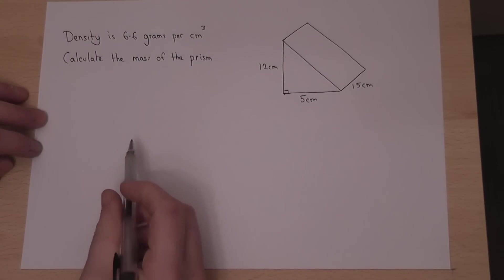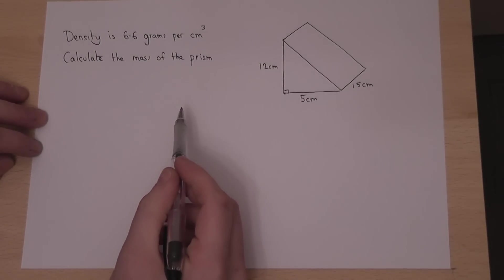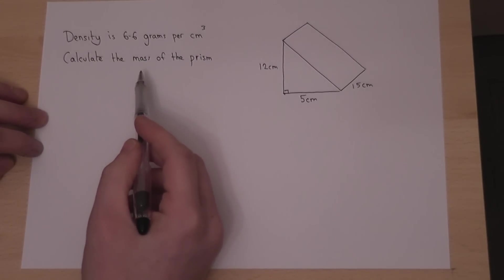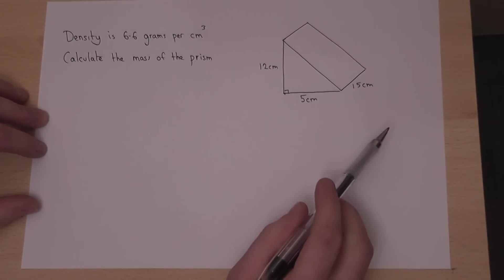In this question we're asked to find the mass of the prism, given the density. Now to find the mass, the first step is to find the volume of the prism.